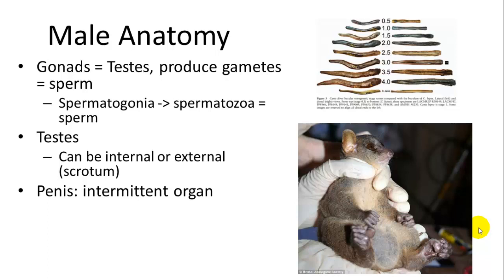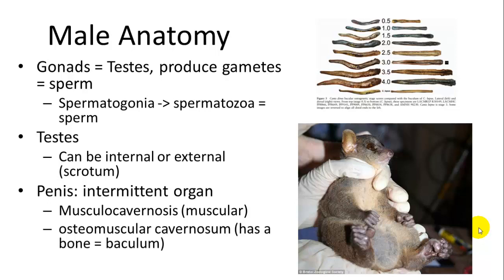The penis is the intermittent organ used in coitus for delivering sperm within the female reproductive tract. There are different types of penises. Musculocavernous penises fill with blood and are made mostly of muscle. Osteomuscular penises have a bone included with tissue that fills and engorges with blood. A fibroelastic penis is mostly connective tissue, is coiled, and becomes erect through a tendon.